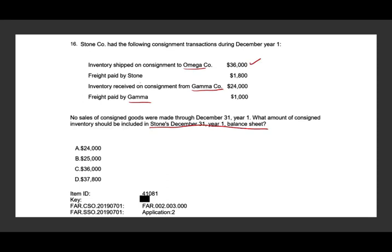Freight paid by Stone for the shipment — $1,800 — is also part of his inventory, part of the consigned inventory. Inventory received on consignment from Gamma is not your inventory; that's Gamma's inventory. Freight paid by Gamma is also Gamma's. Therefore, the amount of consigned inventory is the $36,000 plus the $1,800, which equals $37,800. The answer is D.